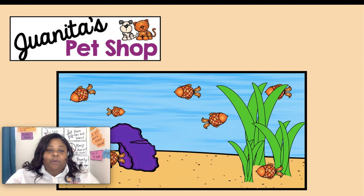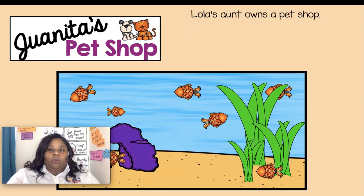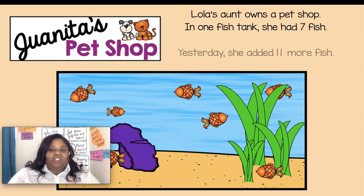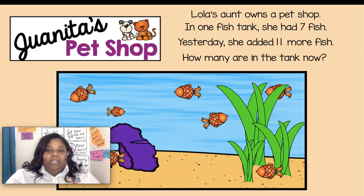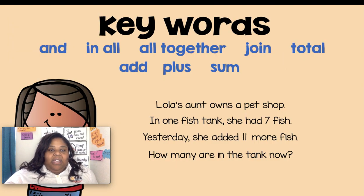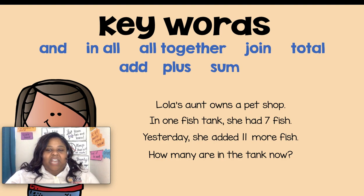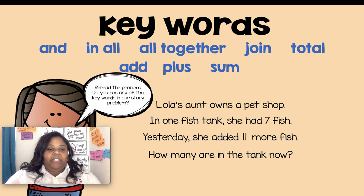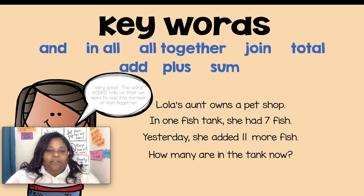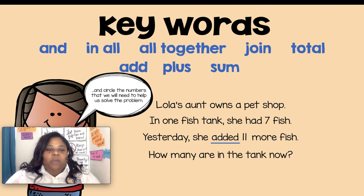All right, friends, let's try another one — erase your whiteboards. Juanita's Pet Shop: Lola's aunt owns a pet shop. In one fish tank she had seven fish. Yesterday she added 11 more fish. How many are in the tank now? Reread the problem. Do you see any of the keywords in our story problem? Very good! The word 'added' tells us that we need to add the number of fish together. Let's underline the keyword and circle the numbers we need — seven and 11.